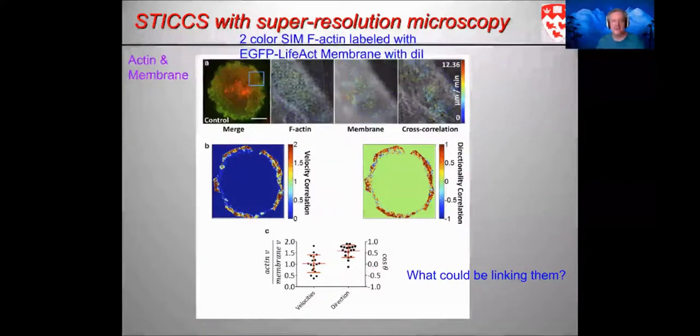If we analyze the two-color image cross-correlation data for the actin and for a membrane DiI, we see a heat map of correlations or cross-correlations. The directionality is highest at periphery where the artificial immune synapses have been generated. Velocity correlation, directional correlation, and not at the center. So the question was then, what could be linking the retrograde actin to the membrane in this case?